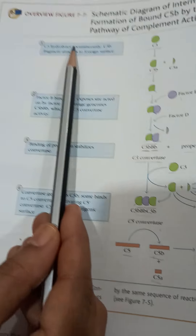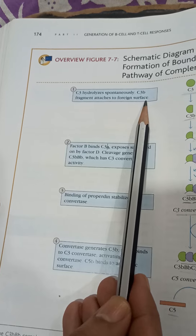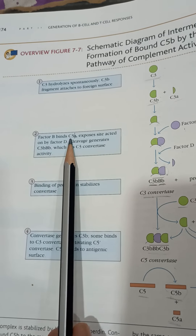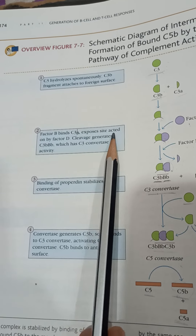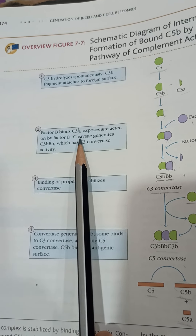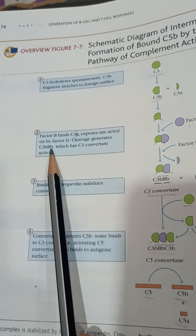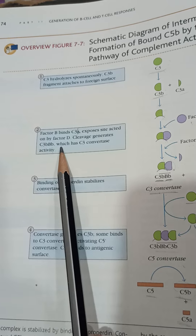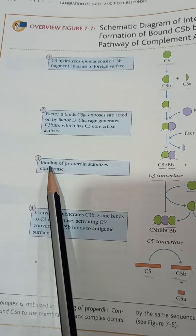To summarize: first, C3 hydrolyzes spontaneously and the larger fragment C3b attaches to the foreign antigenic surface. In the next step, Factor B binds to C3b. This binding exposes a site which is attacked by Factor D. Factor D cleaves Factor B into a larger and a smaller fragment, generating C3bBb, which has C3 convertase activity.